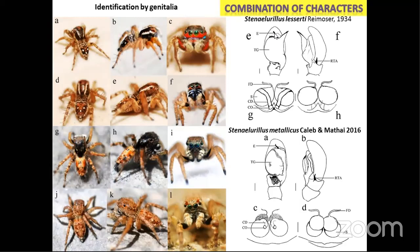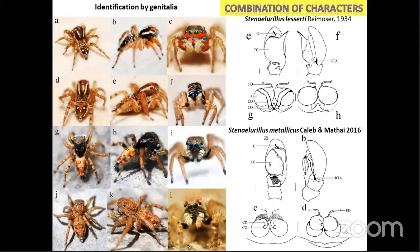Based on a combination of characters, identification of a species becomes more robust. There are important characters such as the embolus in the male palp, the retrolateral tibial apophysis protrusion on the palpal tibia, and various other protrusions on the tegulum. For female genitalia, you have large spermathecae which store sperm, the openings, and the ducts leading to the spermathecae. One species has two chambers and another species has only a single chamber — these characters help distinguish between the two species.